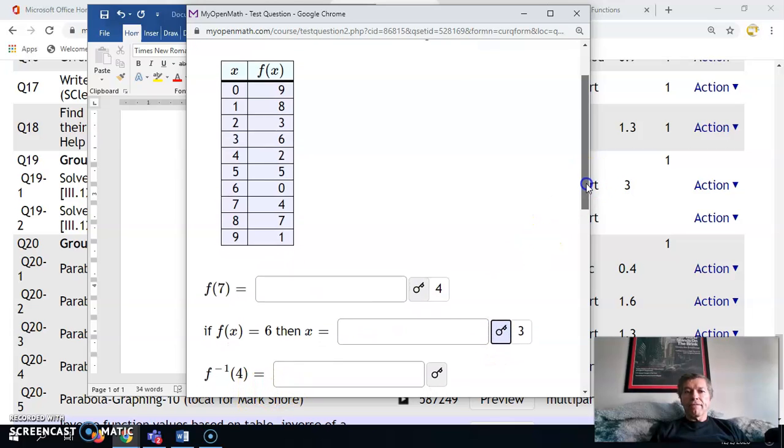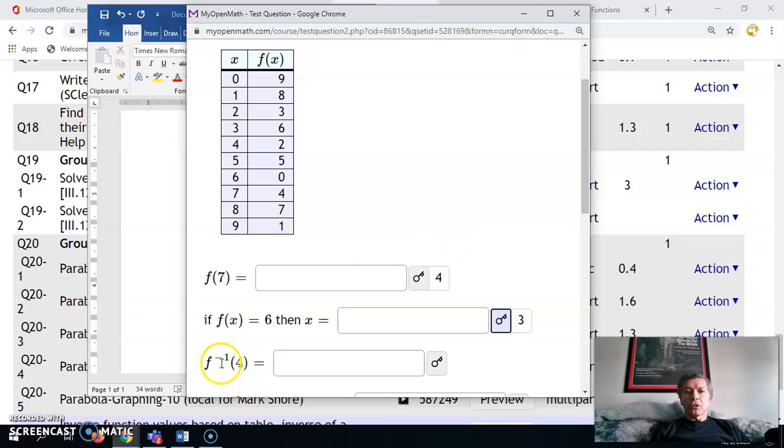f inverse of 4. Well, in other words, we're starting on the right-hand side with 4. Where does that take us to on the left? 7. The reason I knew I was starting on the right-hand side is because it says inverse. We're going from this function back to where we started from. Find the 4 on the right-hand side. It takes you back to 7.